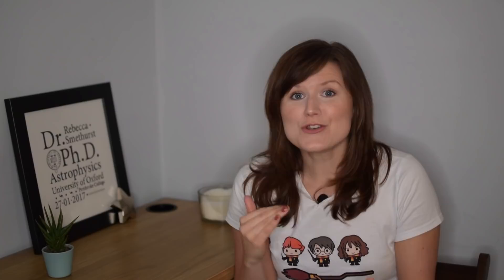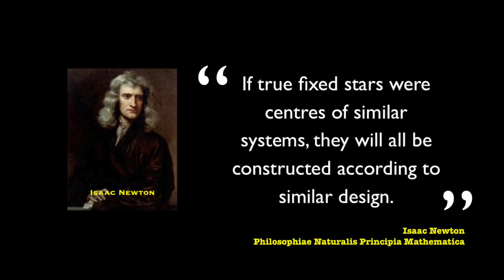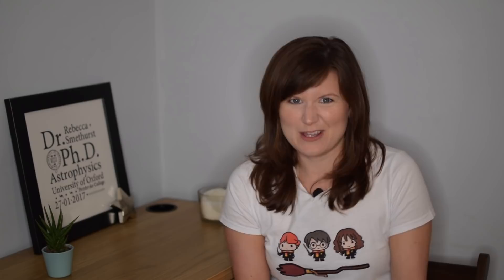Fast forward now to the 18th century and the publication of Isaac Newton's Principia in 1713, one of the most famous scientific works ever. In the conclusion Newton, comparing stars in the sky to the sun, he said, if true fixed stars were centres of similar systems, they will all be constructed according to similar design. AKA the stars in the sky should also have planets in them. And for Newton to echo that same belief, it really fixed in people's minds that the sun wasn't alone in the universe having planets around them.